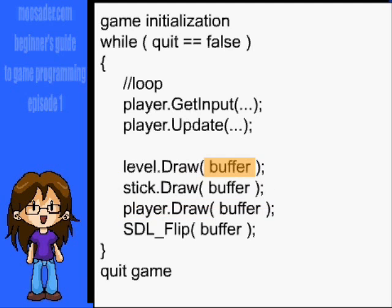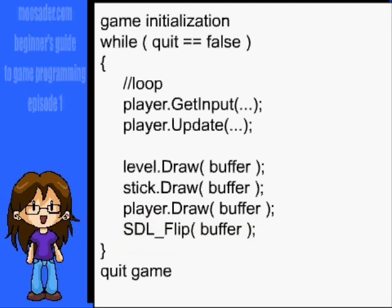So draw the background, items, and characters all to the buffer first. After that's done, draw the buffer to the screen with this function. SDL_Flip will handle double buffering and clearing the buffer, so that's all you need to do there.